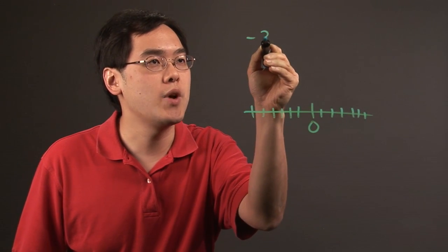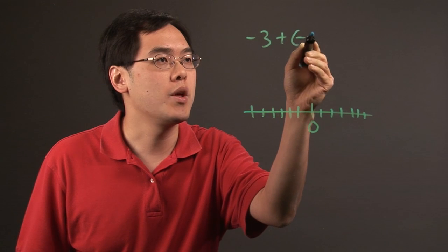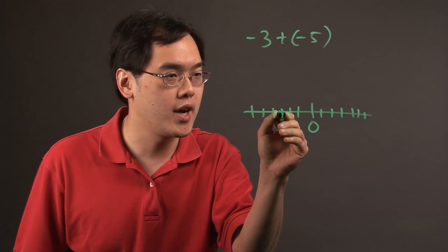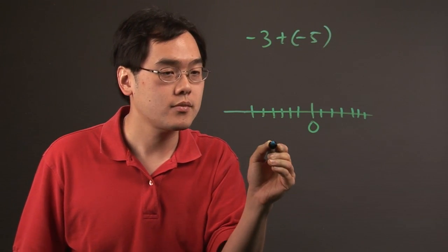So for example, if you want to add negative 3 with negative 5, the idea here is that negative 3 you're starting off here.